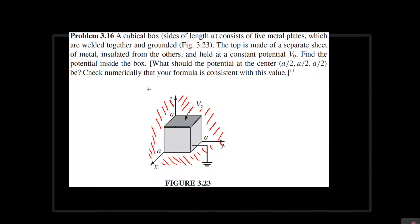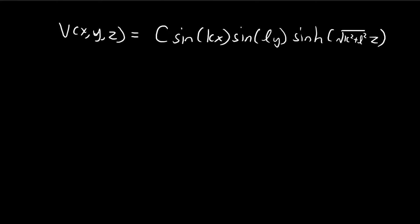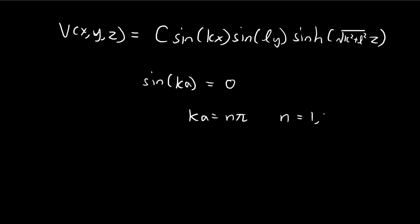Another boundary condition: when x equals a, the potential equals zero. This is only possible if sin(ka) equals zero, which means ka must equal nπ for some integer n. Therefore k equals nπ/a.